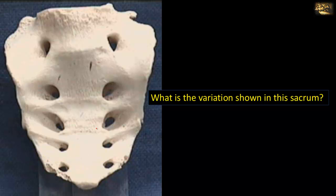What is the variation shown in this sacrum? Looking at the sacral foramina — usually the sacrum is formed by a fusion of five pieces, so in between them there are four sacral foramina. But here you can see there is another sacral foramen, a fifth sacral foramen, which means another piece has been added to the sacrum. This is the fifth lumbar vertebra fused with the sacrum, and this is what we call sacralization of the fifth lumbar vertebra.